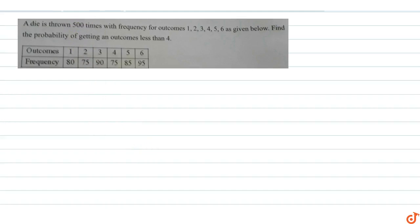In this question, a dice is thrown 500 times with frequency for outcomes 1, 2, 3, 4, 5, 6 as given below. Find the probability of getting an outcome less than 4.